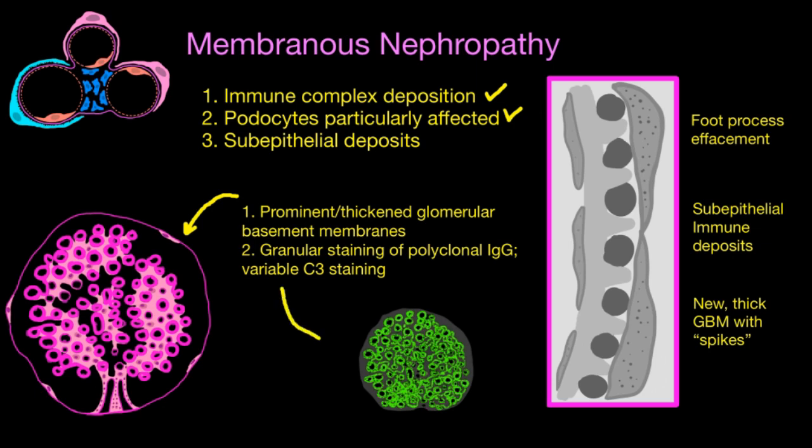If you want to know what that extra material is, you would do immunofluorescence staining. In membranous nephropathy, because it involves immune complex deposits, you see this granular staining for IgG. You may see a little bit of C3 staining. The IgG staining looks something like this — it's brighter in some areas and less intense in others. It's not a uniform, linear staining of all the basement membrane. It's splotchy — this is the granular staining pattern.